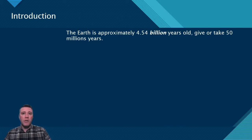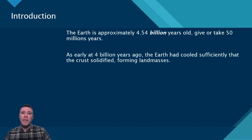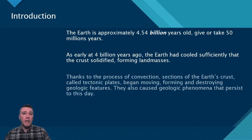While time on scales like that can be difficult to comprehend, the geologic processes occurring on Earth throughout its history influence so many things. Evidence suggests that, as early as 4 billion years ago, early land masses began to form as the Earth's surface cooled. Due to convection beneath the planet's surface, sections of the Earth's crust began to shift and move around.